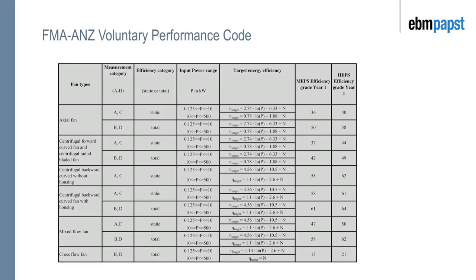Centrifugal fans are not only defined by their blade type but also by their efficiency. Here in Australia you can go to the fan manufacturer's website www.fmaanz.com.au, where you'll find a code of practice for minimum efficiency standards and high efficiency standards for a range of different fan types. For example, the defined minimum efficiency grade for a mixed flow fan is 47, a forward curved fan has a grade of 37, whereas a backward curve fan is much more efficient with a minimum efficiency grade of 58.